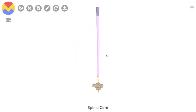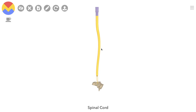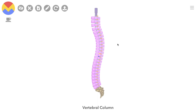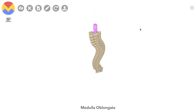We're going to discuss the external features of the spinal cord in this video. It lies in the vertebral canal of the vertebral column, which provides support and protection. The cord is continuous with the medulla oblongata, the lowest section of the brainstem.